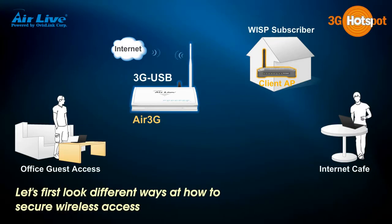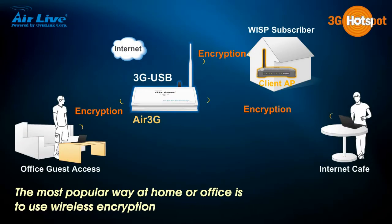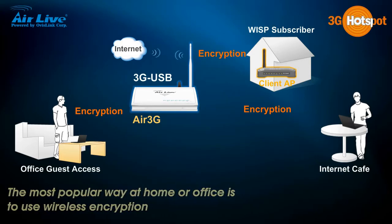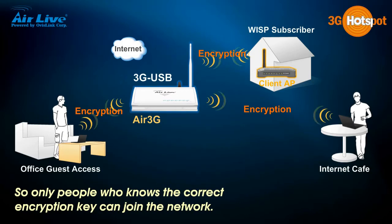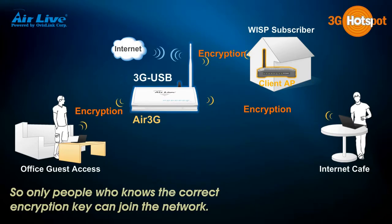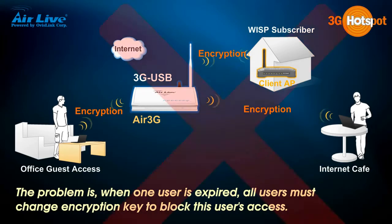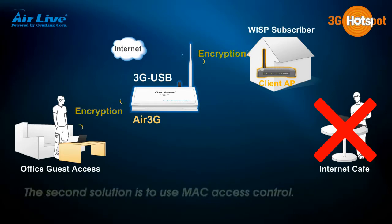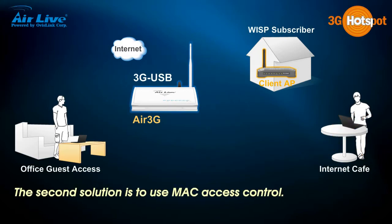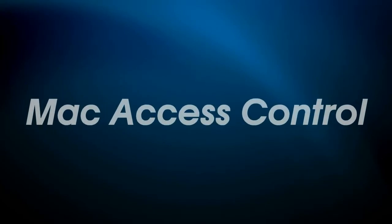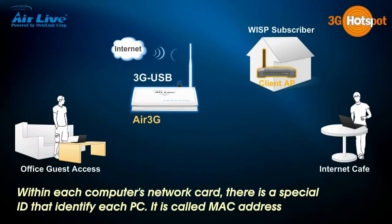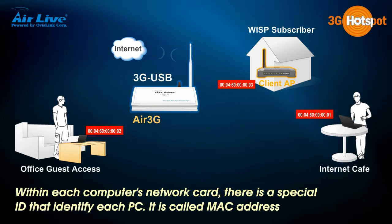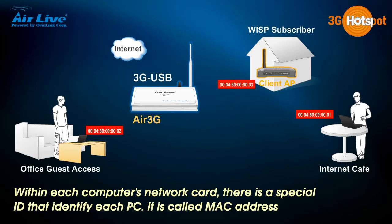Let's look at different ways to secure wireless access. The most popular way at home or office is to use wireless encryption. The second solution is to use MAC access control. Within each computer's network card, there is a special ID that identifies each PC, called a MAC address.